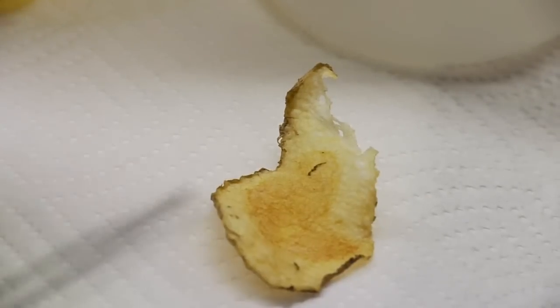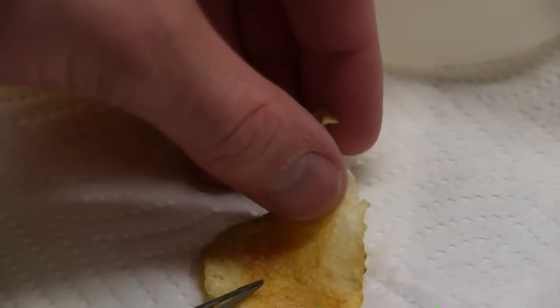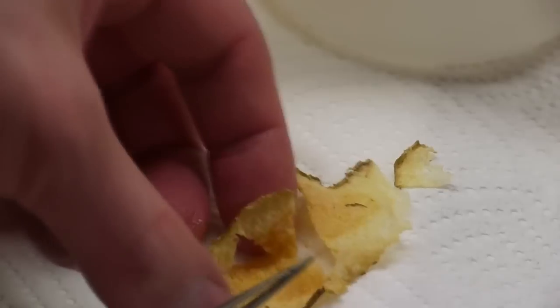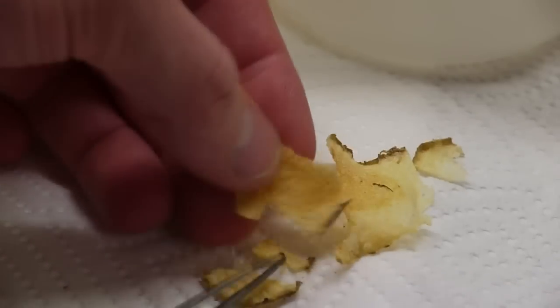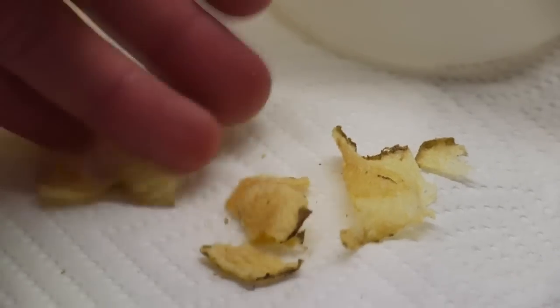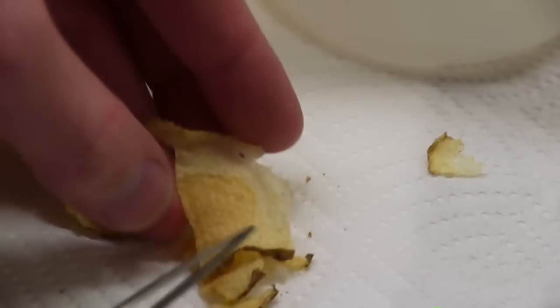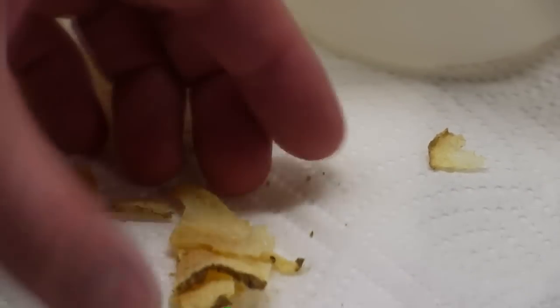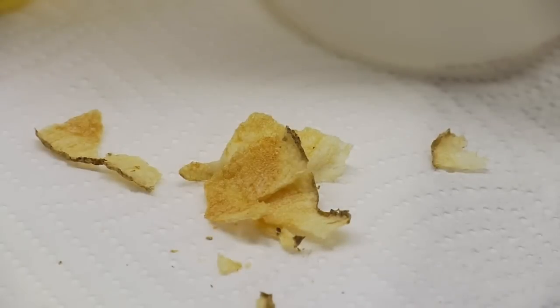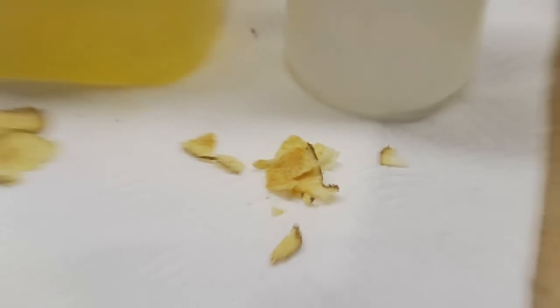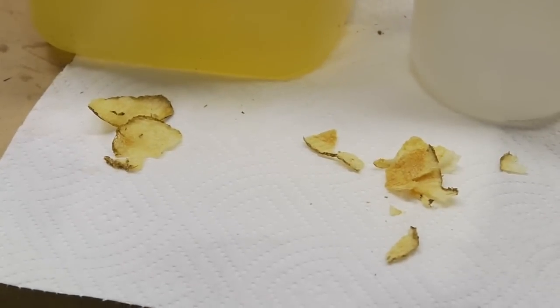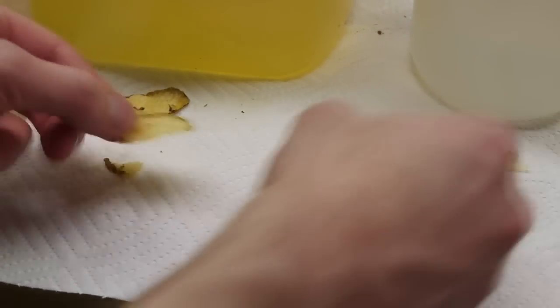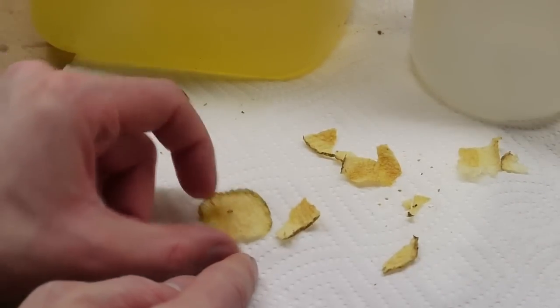So when I took the chip out of the FluoroInert, lo and behold, it's crispy. It's almost like a baked potato chip, like they sell baked potato chips in the stores, although I don't think they cook them in FluoroInert. And it's completely fat free. Since there's no fat in the potato to begin with, they're extremely low amounts, and there's no fat in the FluoroInert, there's no way that you can gain fat in the cooking process. So it's a totally fat free potato chip. But it crunches just like a fried potato chip. And it's browned just like a fried potato chip.